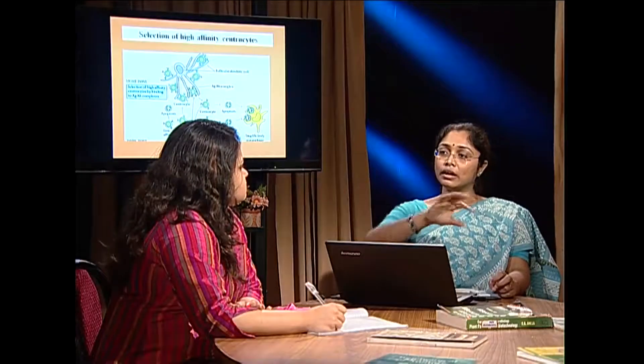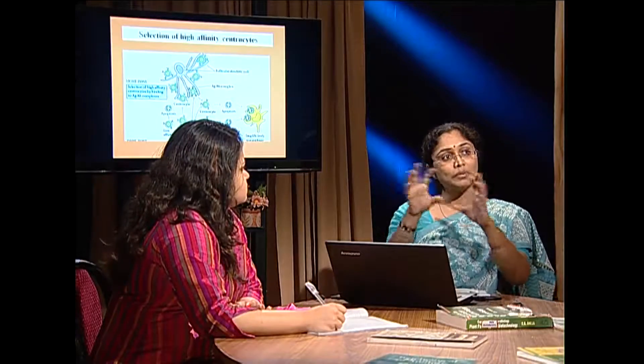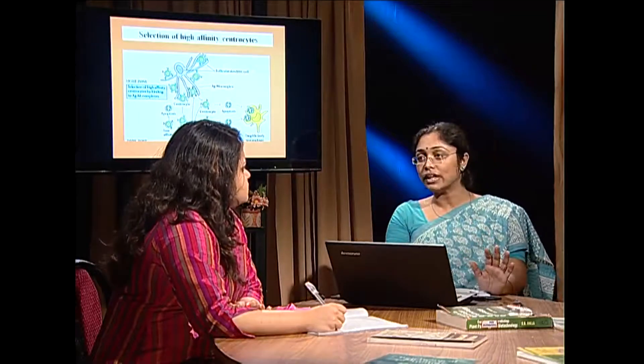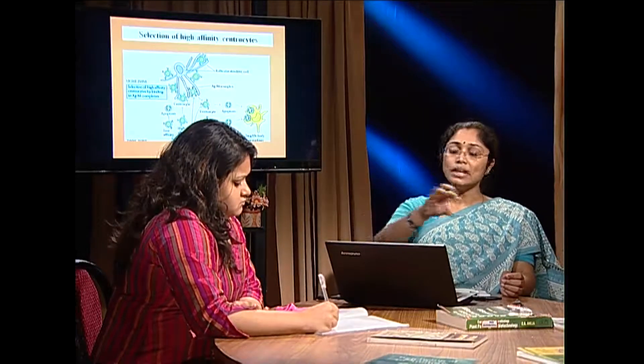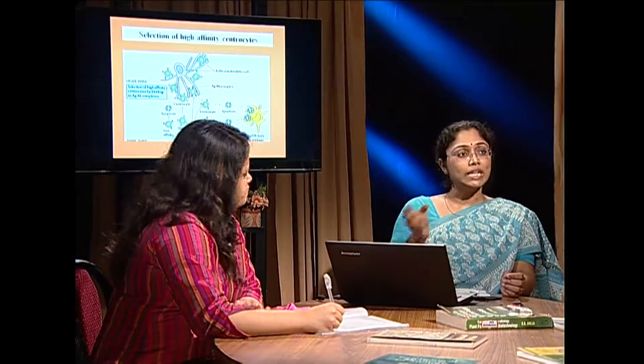These centrocytes must interact with the antigen again to receive a survival signal. Many follicular dendritic cells are present in the primary follicle; they bind antigen-antibody complexes on their long projections. The centrocytes compete with each other to bind antigens presented by the follicular dendritic cells. Only centrocytes that successfully bind the antigen receive the survival signal; the rest die by apoptosis. Thus, from the pool of B cells, only those with high-affinity B-cell receptors for that particular antigen are selected.